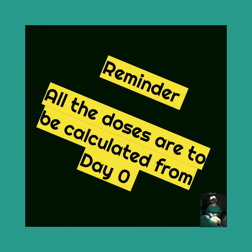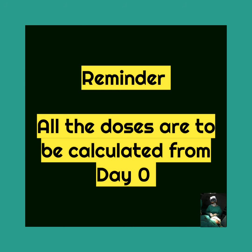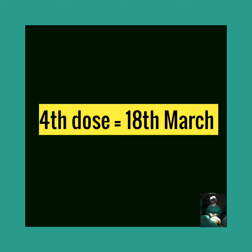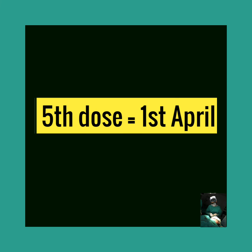We have to calculate all the doses from day 0. That is, counting 5, 6, 7, 8, 9, 10, 11 — that is the 3rd dose on 11th March. The 4th dose will be on 18th March. Likewise, the 5th dose will be on 1st April.